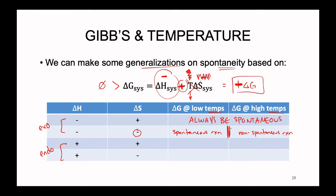To make it really clear: at low temperatures, an exothermic reaction that has a decrease in entropy will be spontaneous, and at high temperatures it will be non-spontaneous. A really good example of this is the rusting of iron, the explicit entropy of which we've already calculated. We found that the entropy change of the system is negative as we take a solid and combine it with a gas to create a solid.